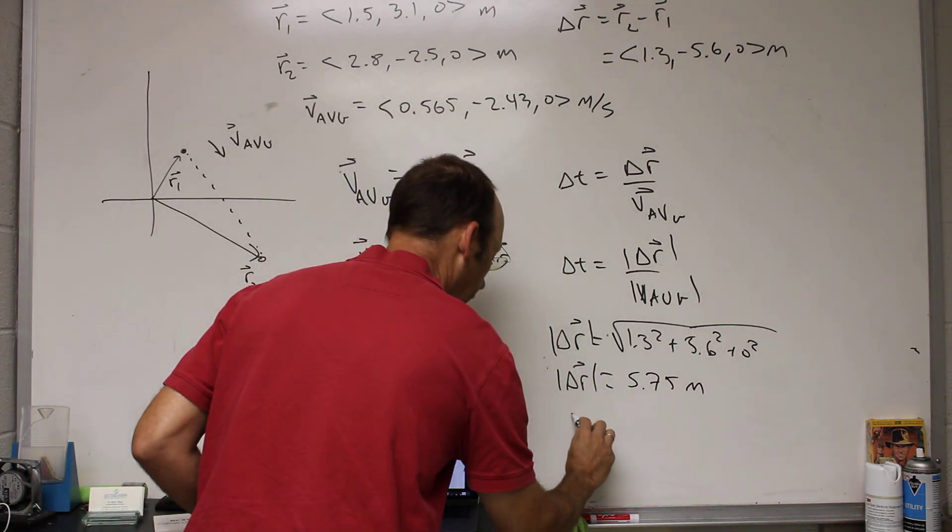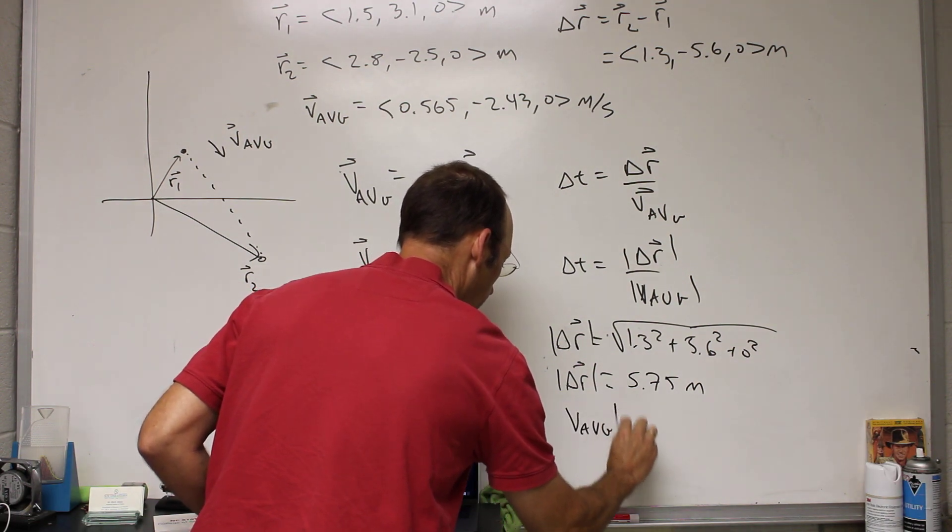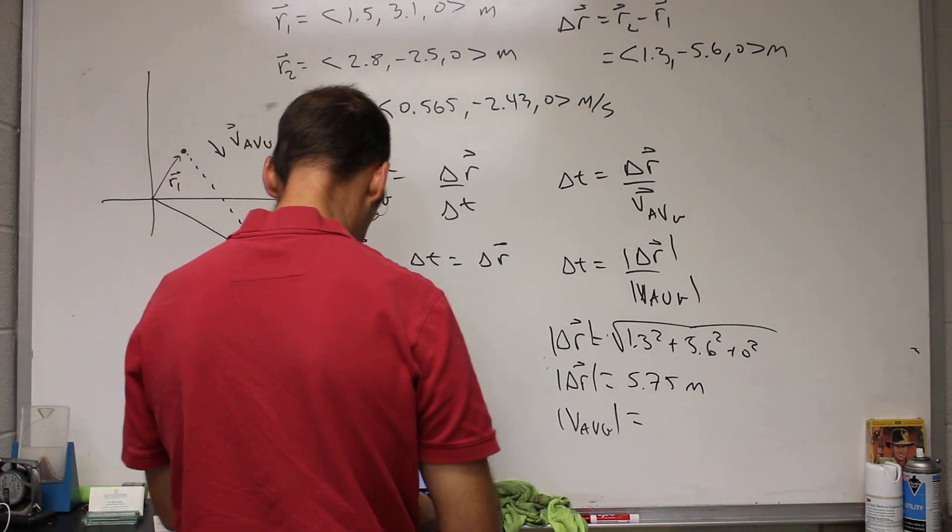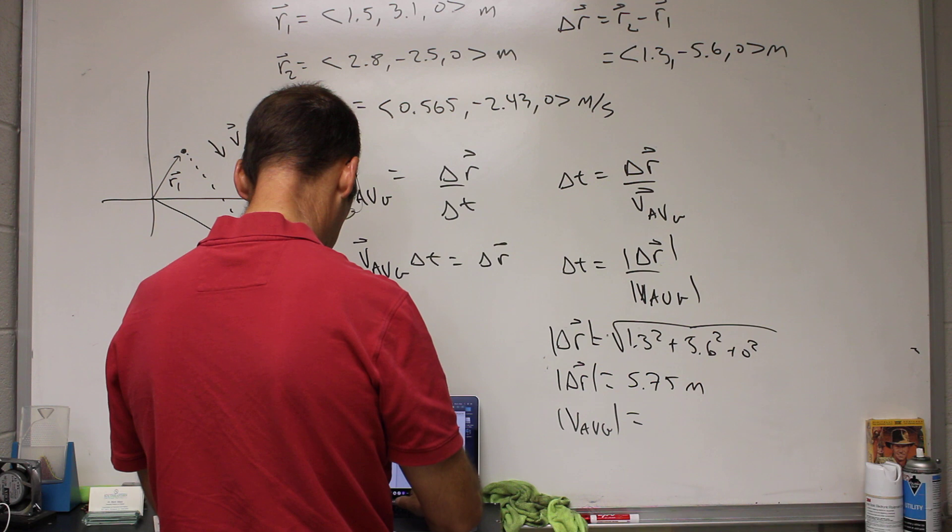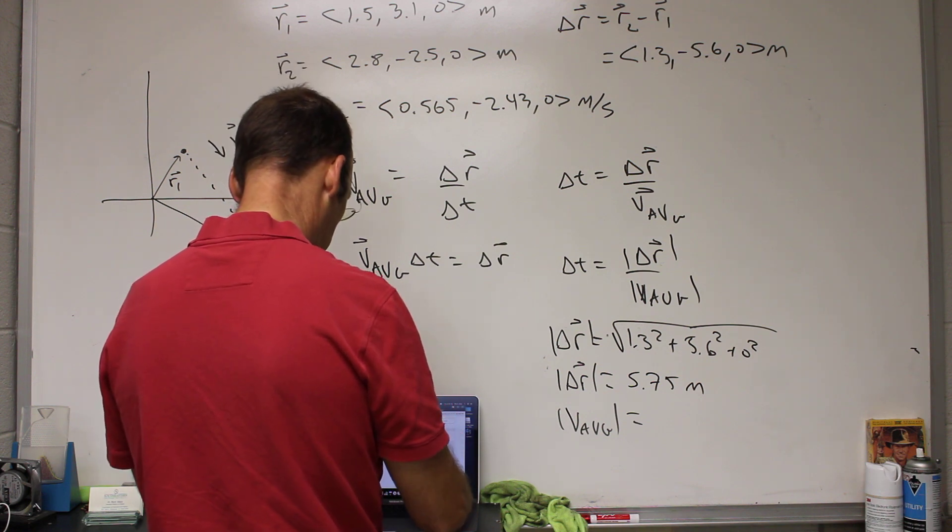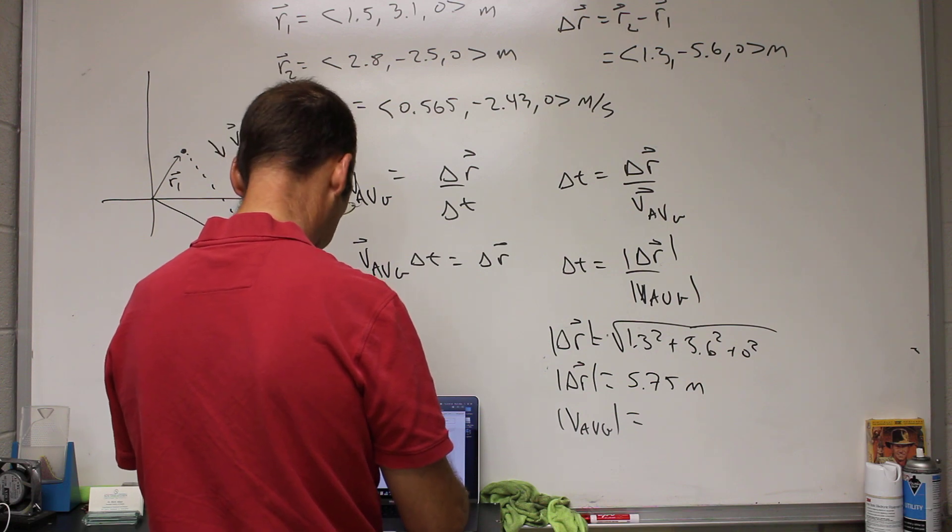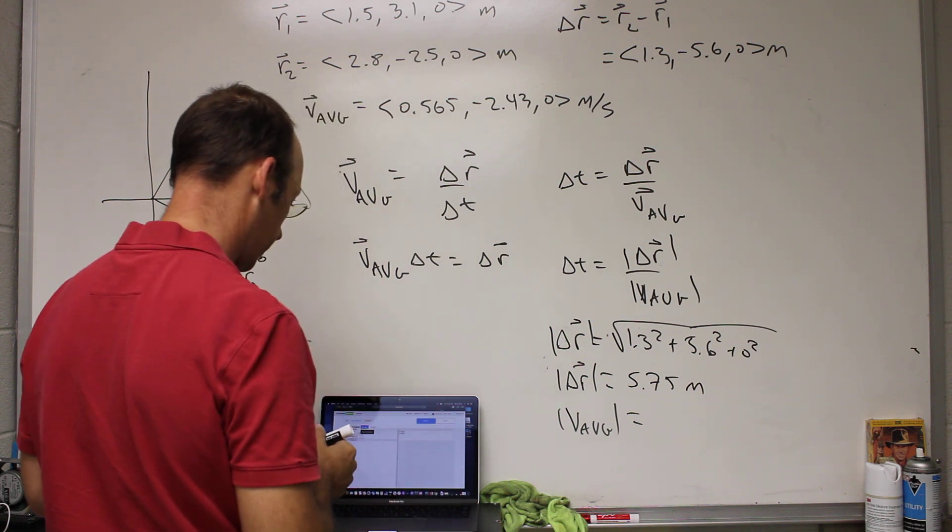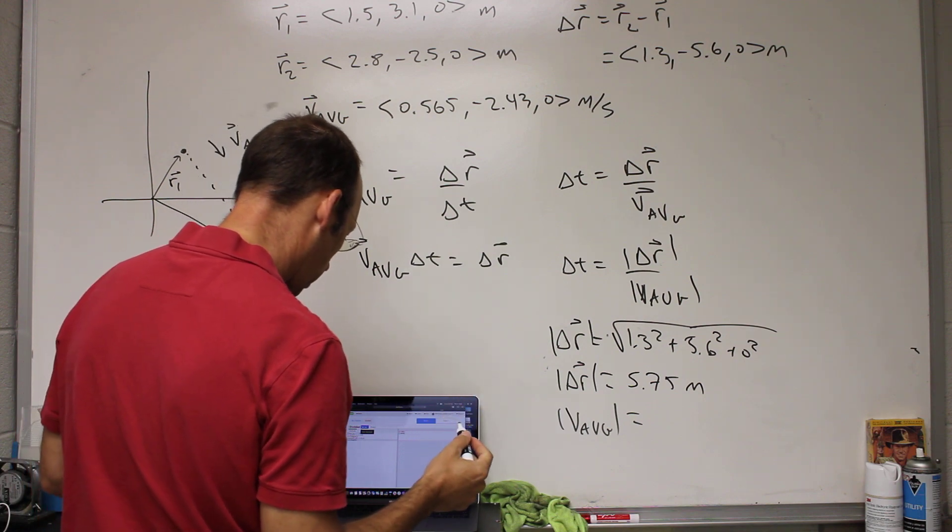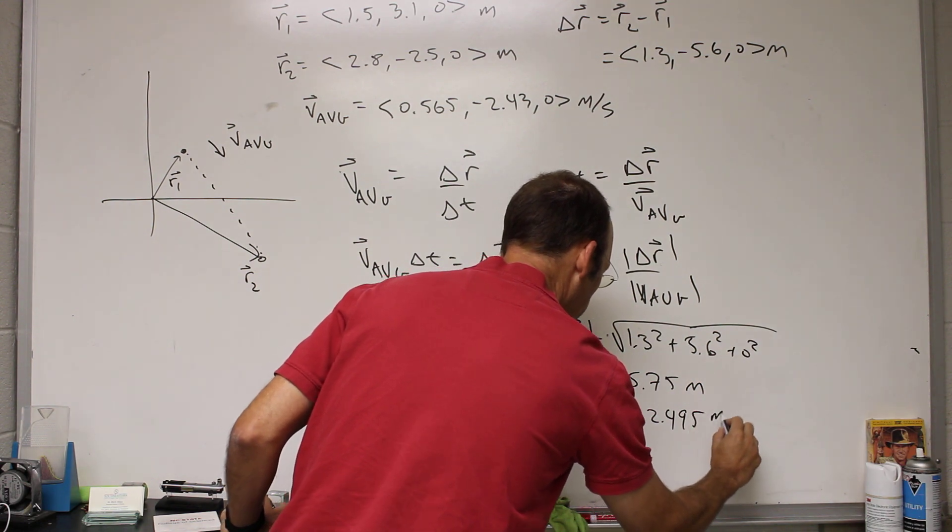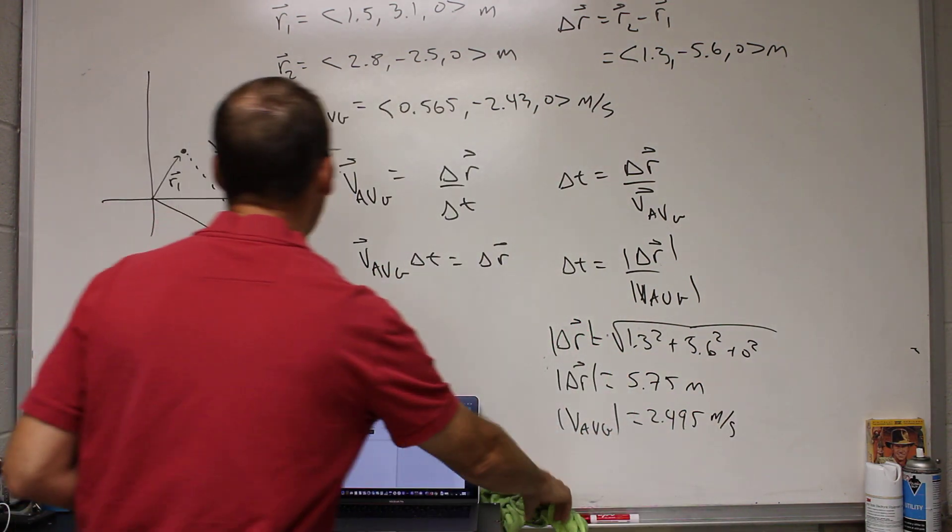And then I can do the same thing for v average and get the magnitude. And that's just going to be the magnitude of this vector. So I'm going to put that in here: 0.565, negative 2.43, 0. Print mag v. I get 2.495 meters per second.